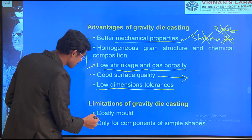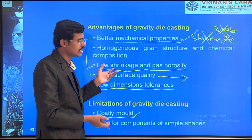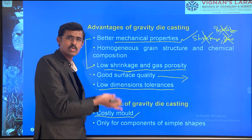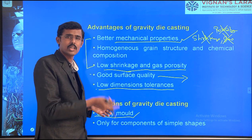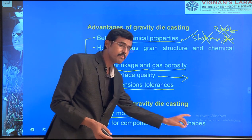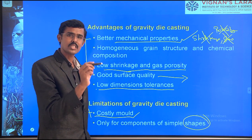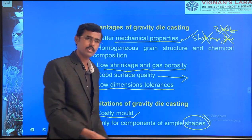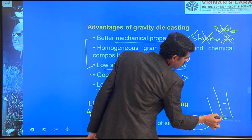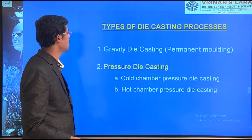Limitations: die casting is costly because we are moving from sand to metal molds. However, because sand mold casting consumes more time — making one product at a time — while here we make hundreds of thousands of products in the same time, the cost is actually negligible. Die casting is only suitable for components of simple shapes in the gravity method, since complicated designs require injection pressure to reach all corners.